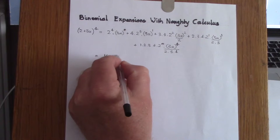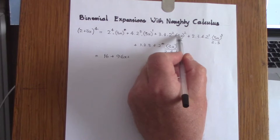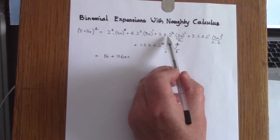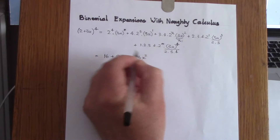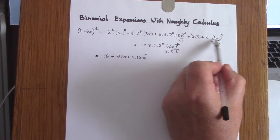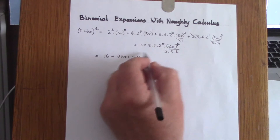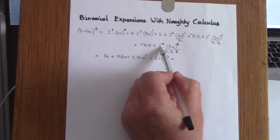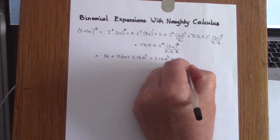Then 9 times 3 is 27, and cancelling one of the twos gives 27 times 8 which is 216, so we get 216x². Here we simplify similarly: 3 cubed is 27, times 8 is again 216x³. And finally we get 3 to the power of 4 which is 81, giving 81x to the power of 4.